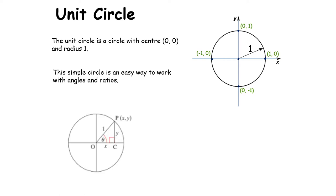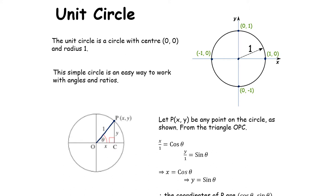Here is the unit circle with radius 1. Let P(x, y) be any point on the circle. We have a right-angle triangle OPC, formed by dropping a vertical line from P. If that point P is (x, y), that gives us x along the x-axis and y as the vertical height. Since it's a unit circle, the hypotenuse of this triangle is 1.